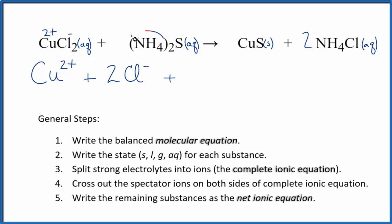And then the ammonium ion, the whole thing is 1+. Good one to remember. We have two ammonium ions, so we'll have 2NH4+. And then the sulfide ion is 2-. So we'll have that sulfide ion, S2-. And those are the reactants in our complete ionic equation.